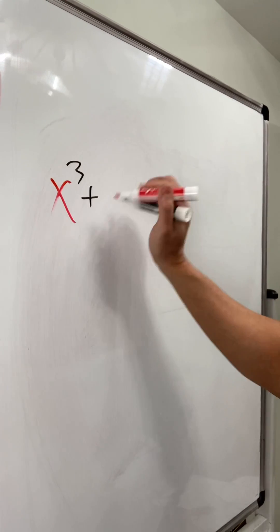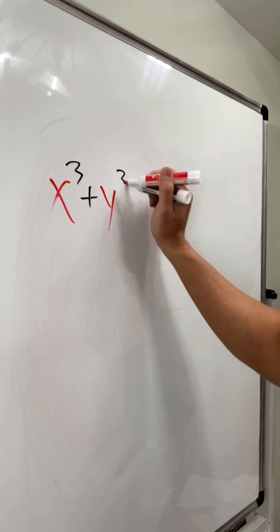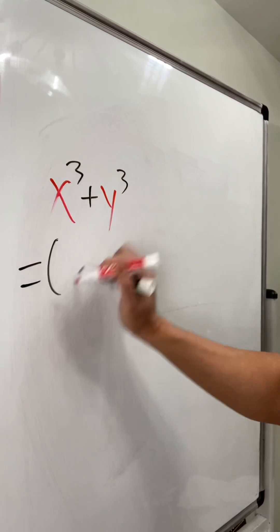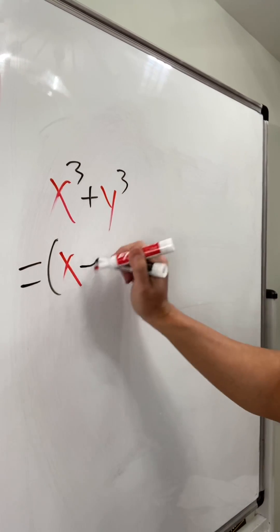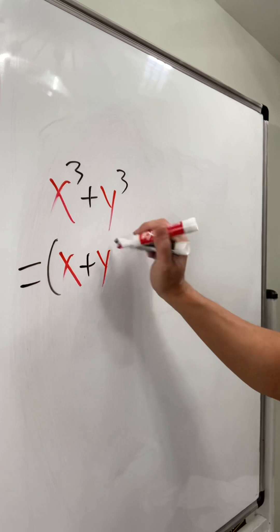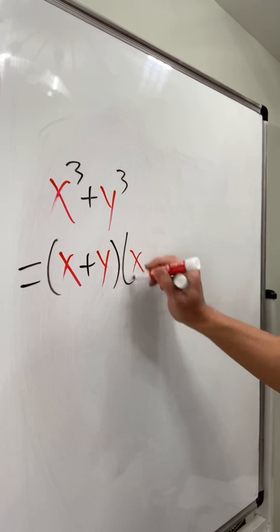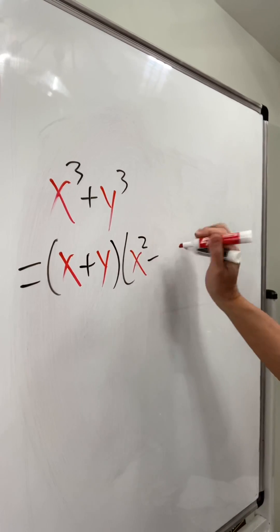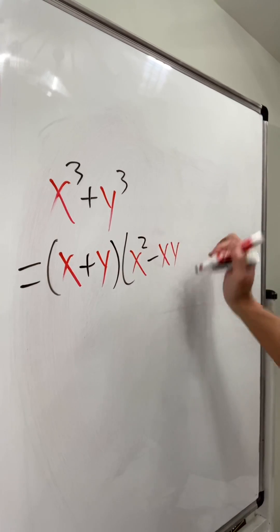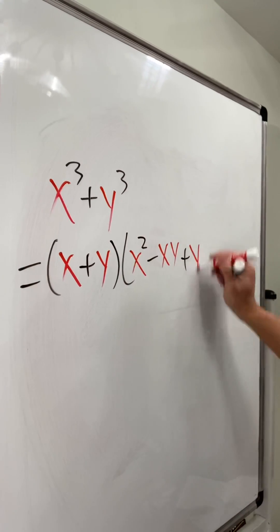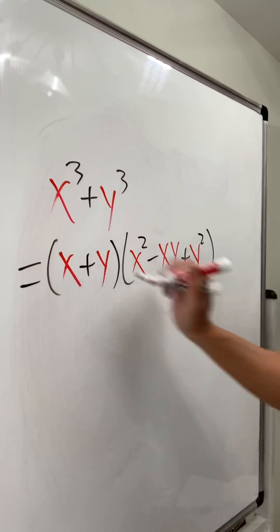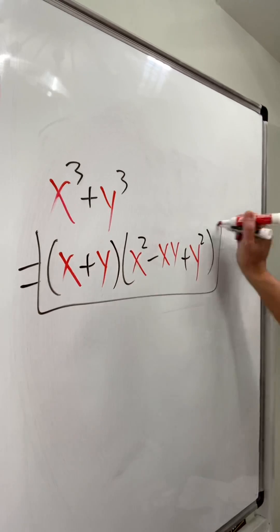To factor x to the third power plus y to the third power, this right here is just going to be x plus y times x squared minus xy plus y squared, like this.